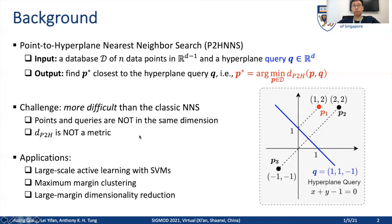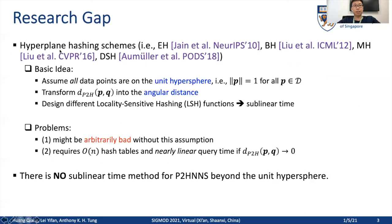This problem has wide applications in many machine learning and data mining tasks. In the literature, there exist many hyperplane hashing schemes for this problem. These methods assume all the data points are on the unique hypersphere — for example, the L2 norm of all data points P are normalized to one — so that the point to hyperplane distance can be transformed into the angular distance. They then design different locality-sensitive hashing functions to achieve sublinear time for the point to hyperplane NN search.